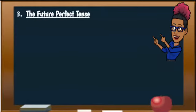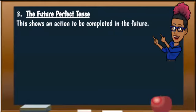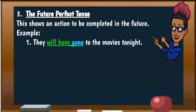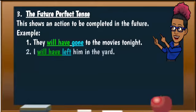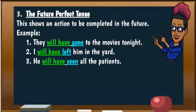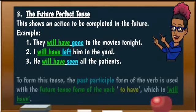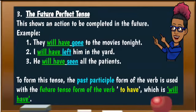So let's now move on to our future perfect tense. This shows an action to be completed in the future. The past participle form of the verb — go, leave, and see — will be used with the future tense form of the verb 'to have,' which is 'will have.' So all the sentences will have 'will have' in our future perfect tense with our past participle.